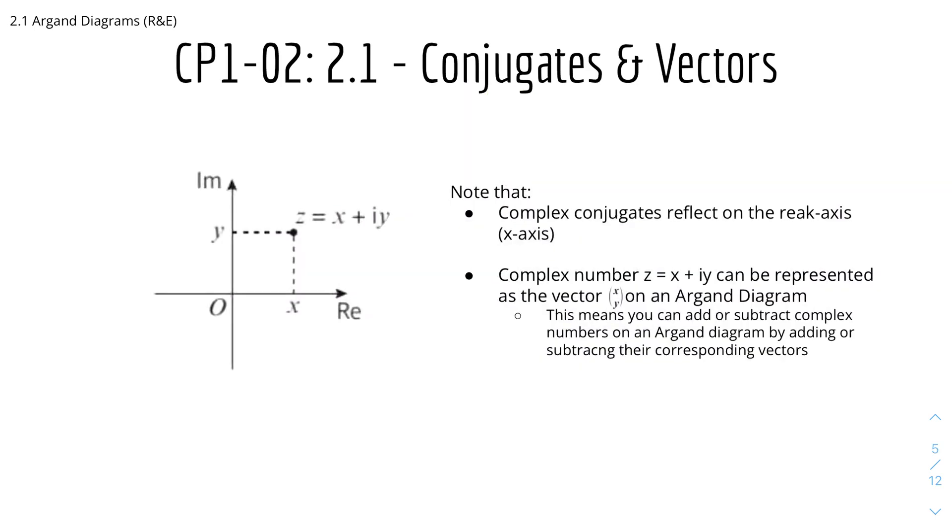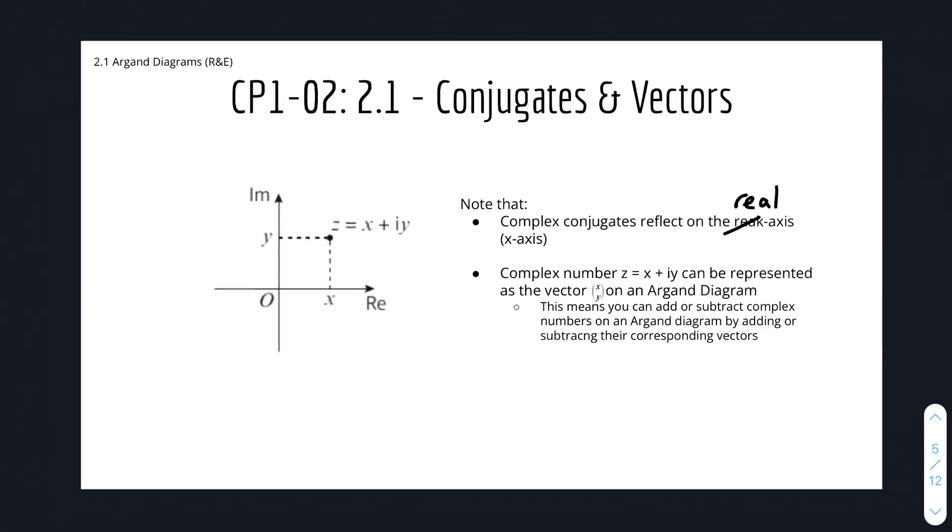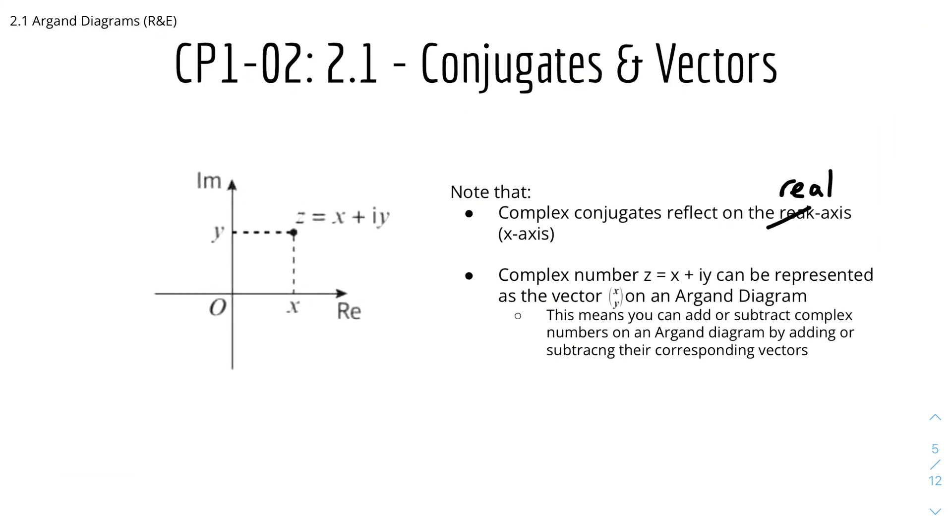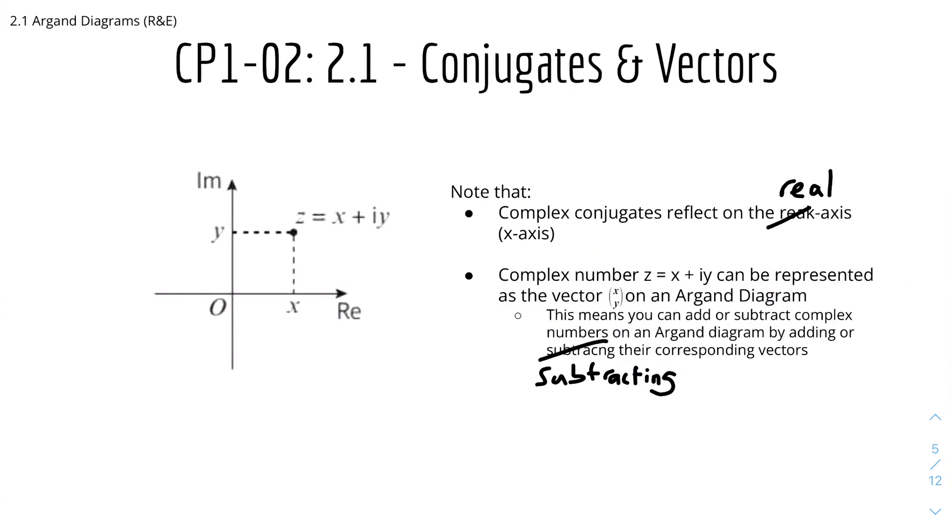Here we have conjugates and vectors. Note that complex conjugates reflect on the real axis. The complex number z equals x plus iy can be represented as the vector (x, y) in column vector form on an Argand diagram. This means you can add or subtract complex numbers on an Argand diagram by adding or subtracting their corresponding vectors. It works the same way as normal adding and subtracting vectors.